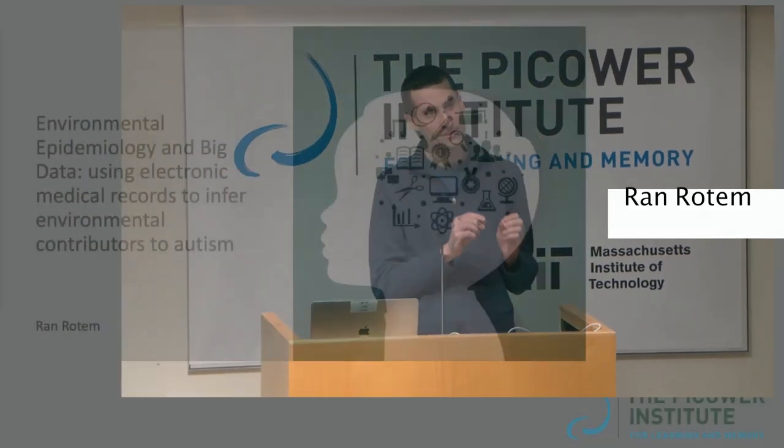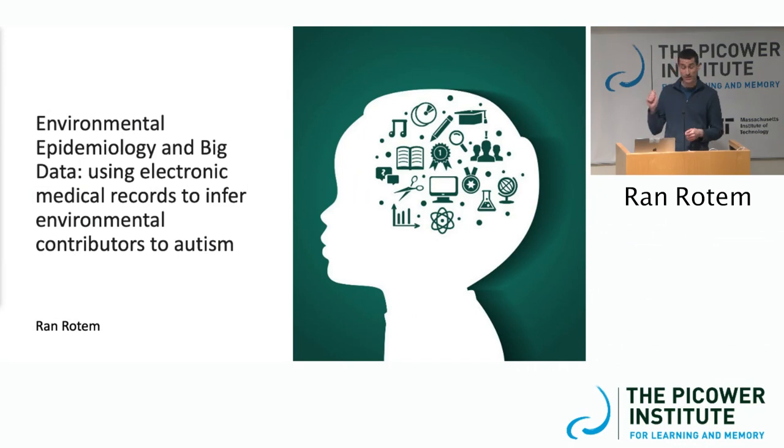We had a lot of great discussions today about using animal models to infer both environmental exposures that can cause an outcome and also potentially the mechanisms by which they do that. I wanted to take a different approach — an epidemiological approach — on how we can try to identify both environmental exposures and potentially the mechanisms, specifically using electronic medical records. I'm going to use autism as a case in point of how you can do that.